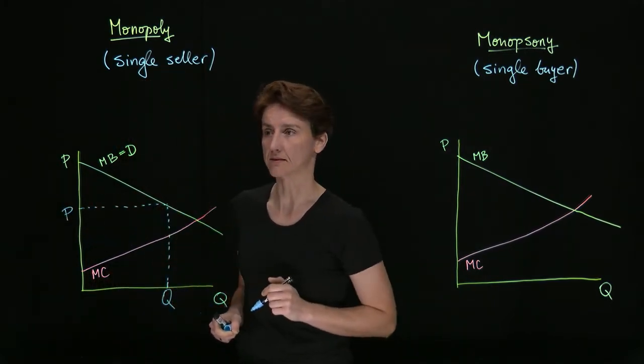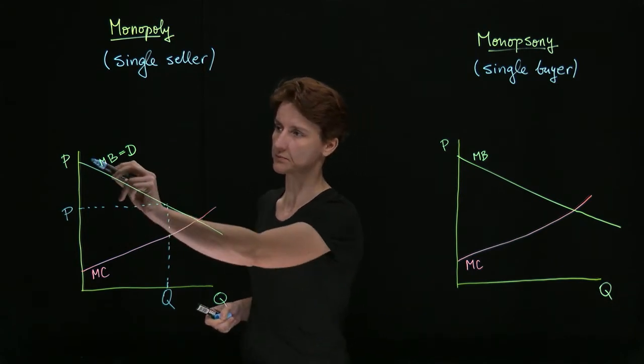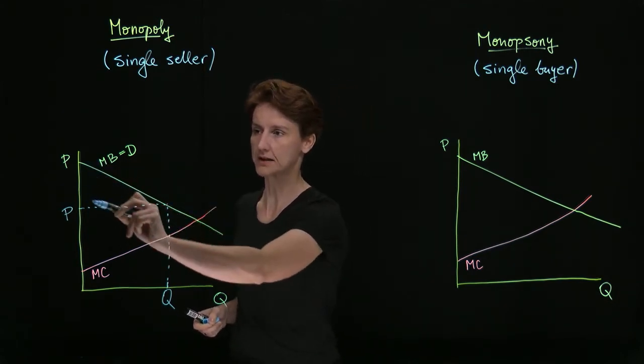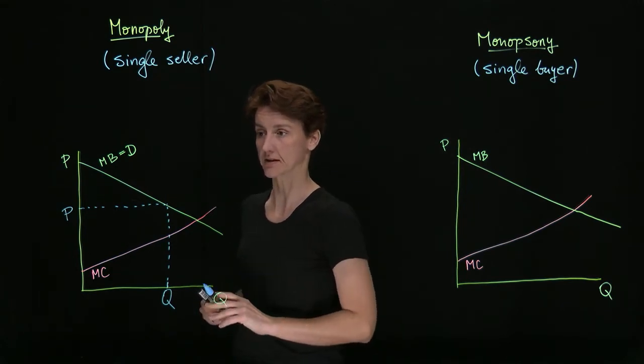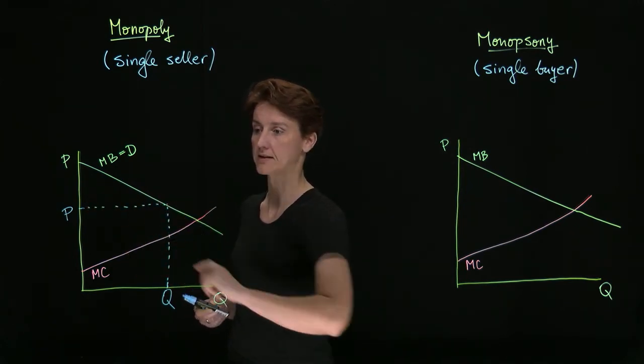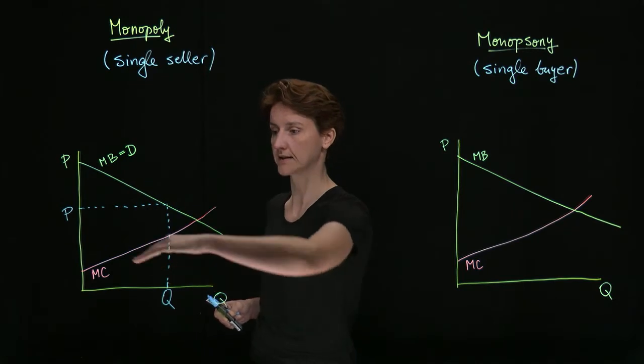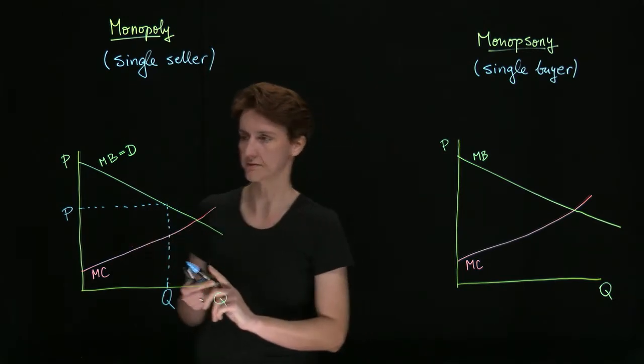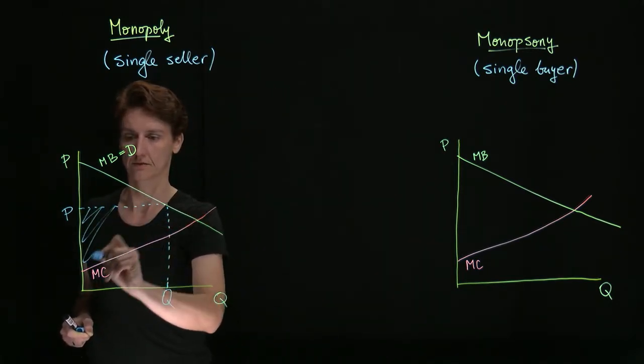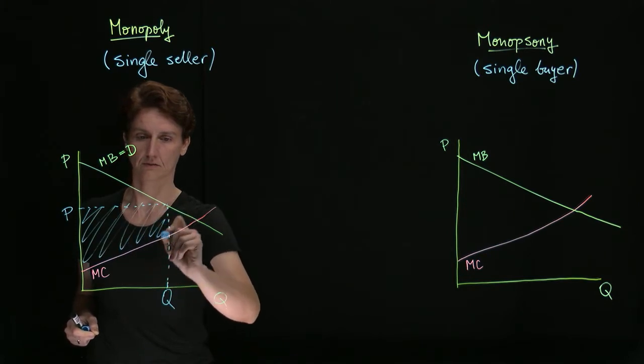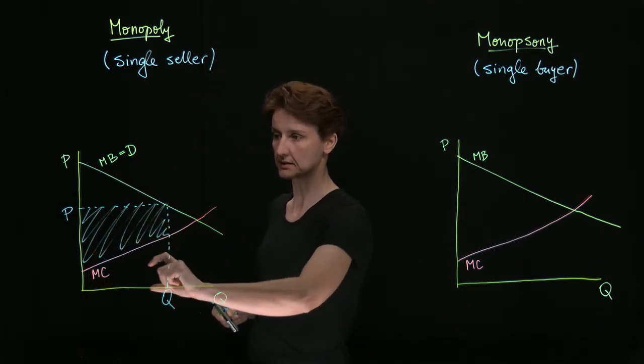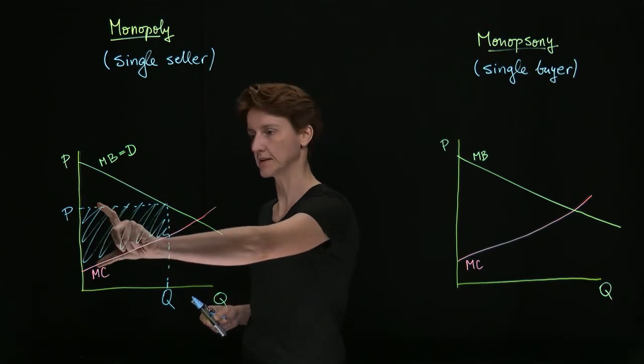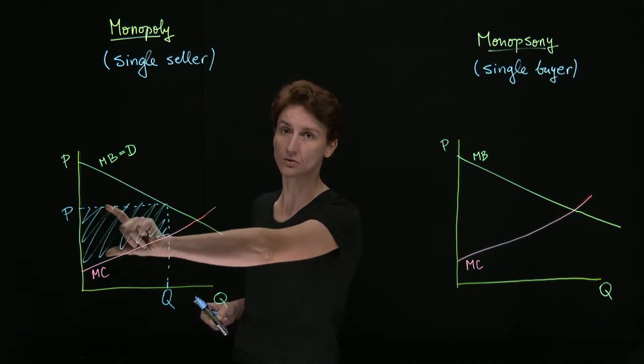What is the surplus in this market? Consumer surplus is this triangle above price and under the demand curve. Producer surplus is this area that's under the price and above the marginal cost curve. Because for each one of these units, the seller obtains a certain price but incurs only this cost to produce it.